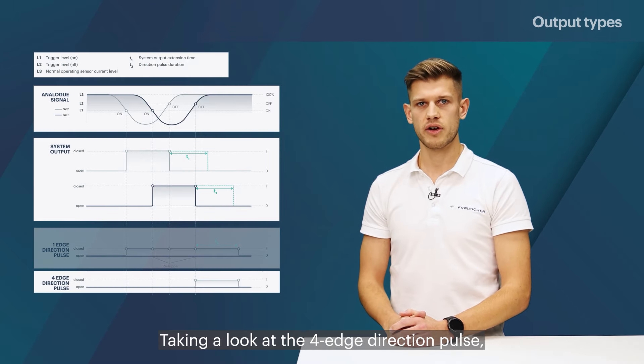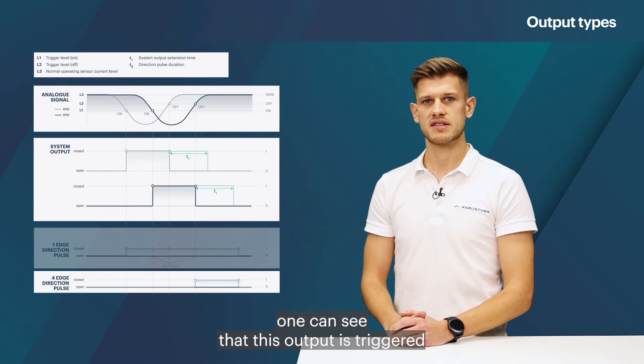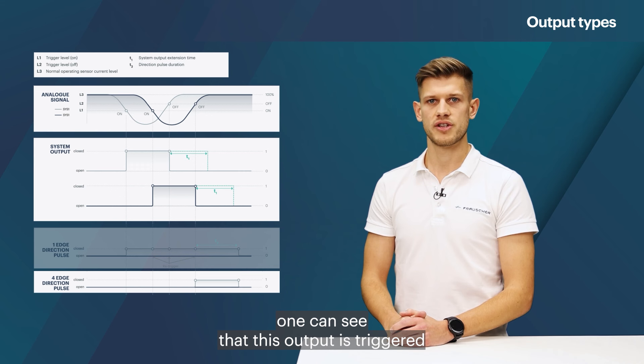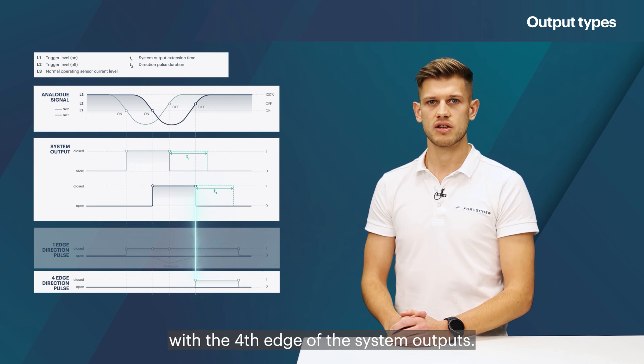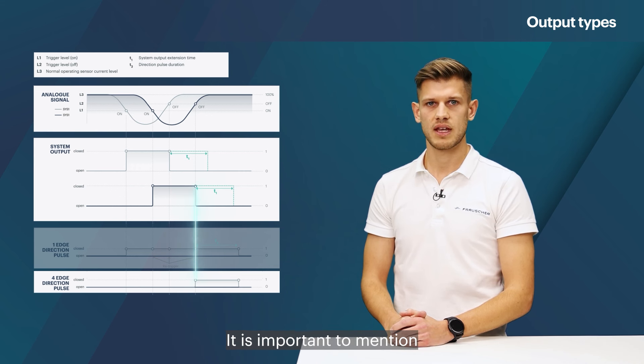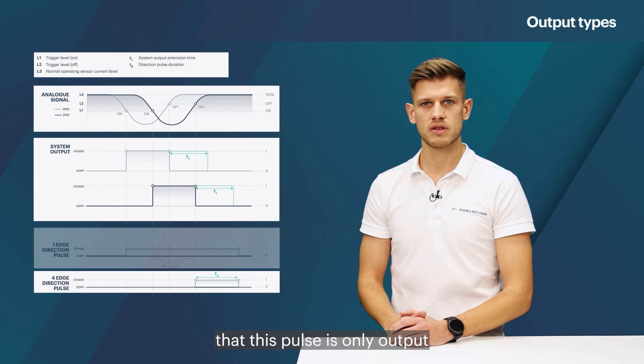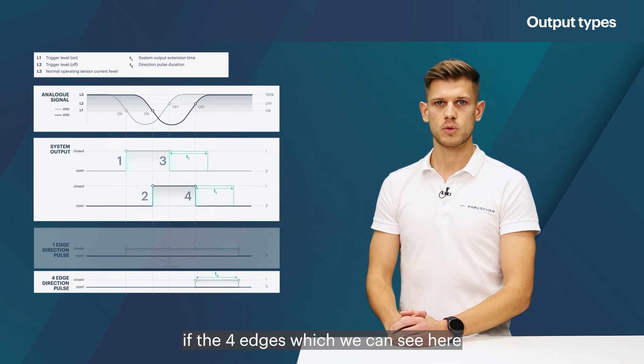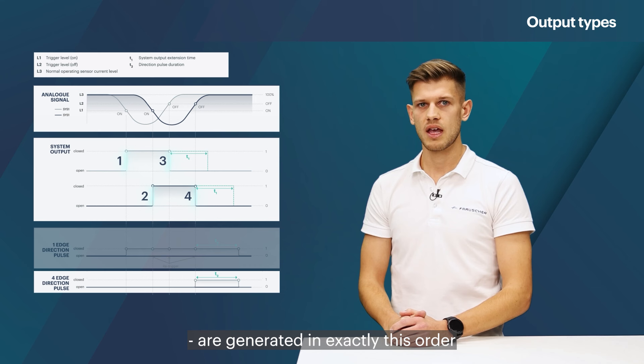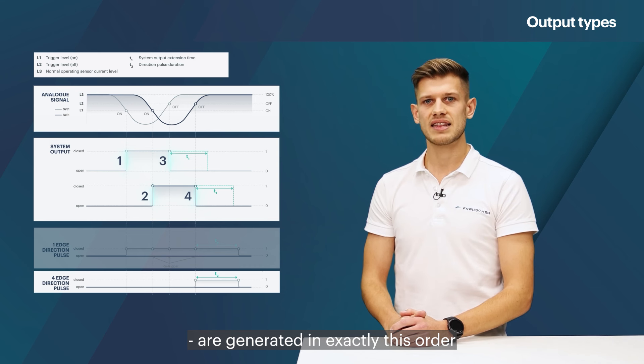Taking a look at the four edge direction pulse, one can see that this output is triggered with the fourth edge of the system outputs. It is important to mention that this pulse is only output if the four edges, which we can see here, are generated in exactly this order.